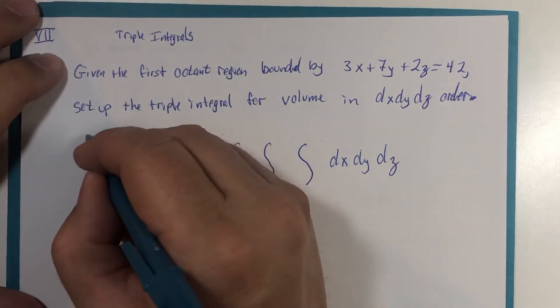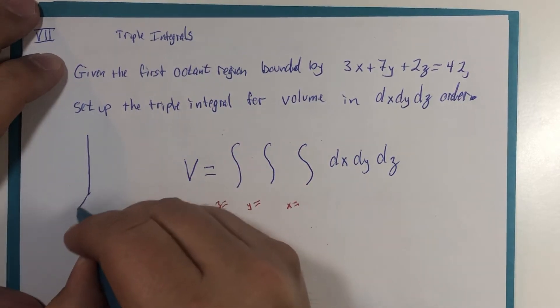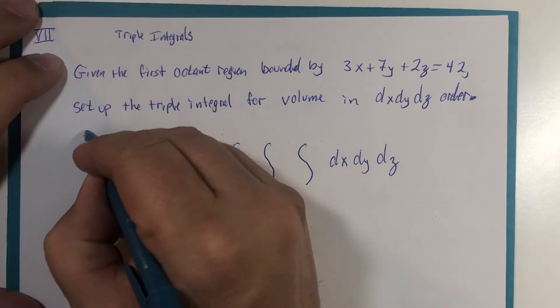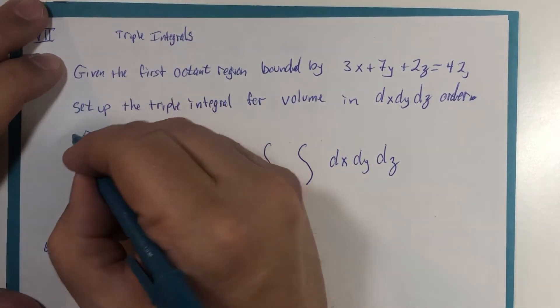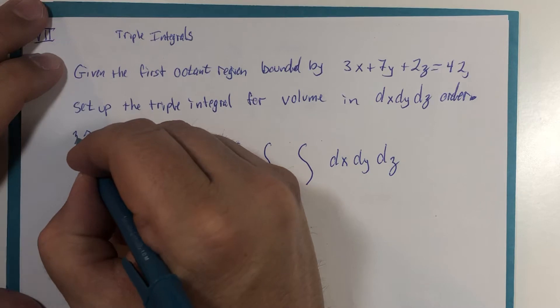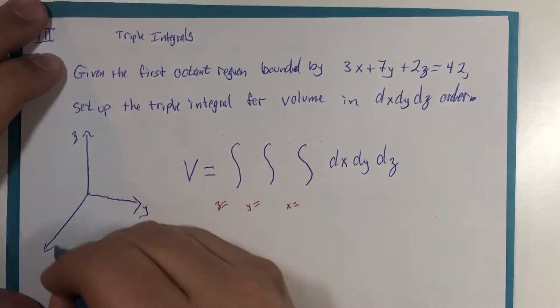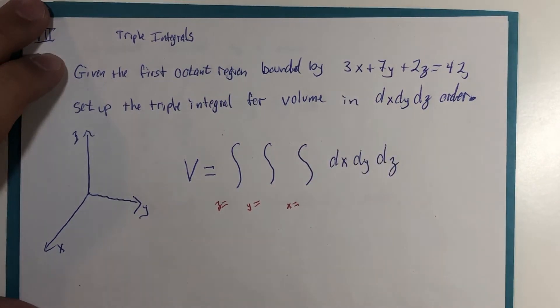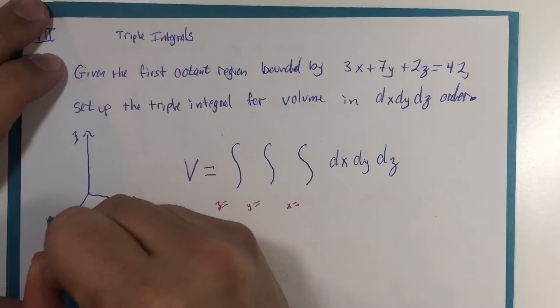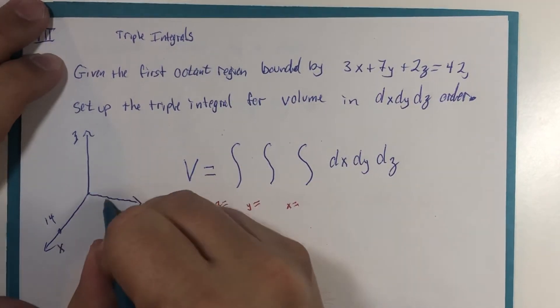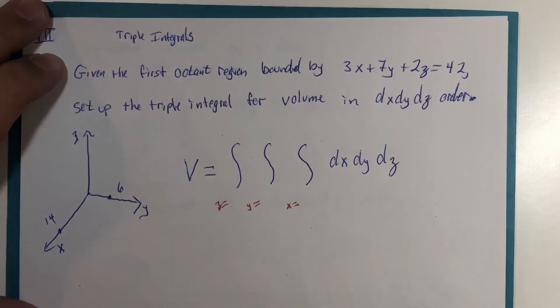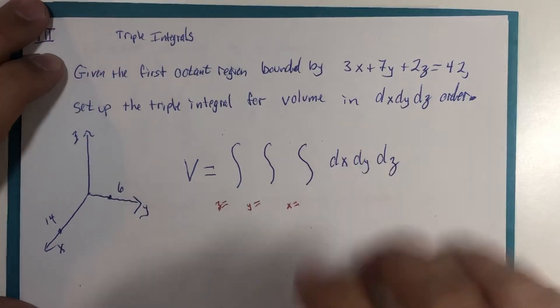So we have the plane itself, z, y, x. The x intercept happens to be 14. The y intercept happens to be 6. And the z intercept happens to be 21.